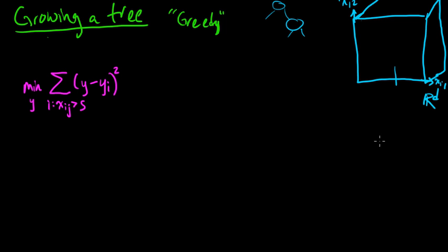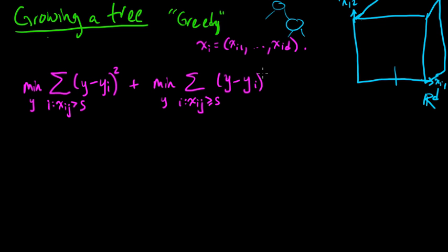So we're going to sum over those i's for which xi, the jth coordinate, is greater than s. And we also have this part, the min over all y's, sum over i such that xij is less or equal to s, y minus yi squared.